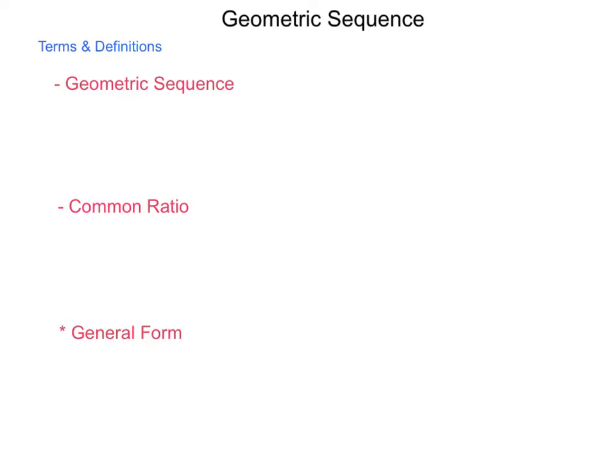The second main type of sequence that we study in Algebra 2 is the geometric sequence. For definitions, a geometric sequence is a set of numbers that has a constant factor between consecutive terms, meaning that in order to move from one term to the next, you're always multiplying by the same amount.